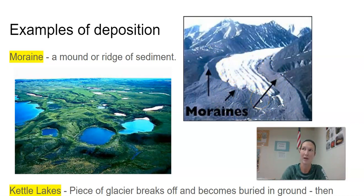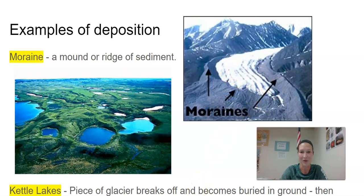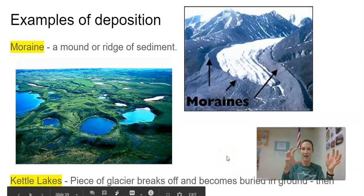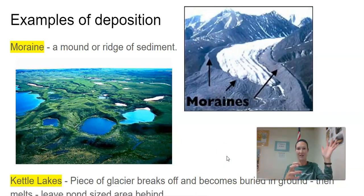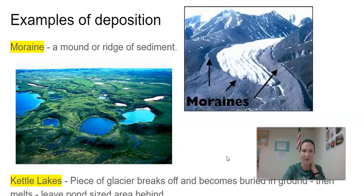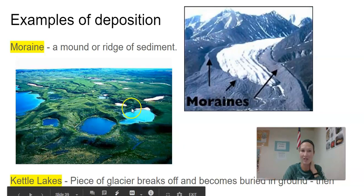This is called the moraine. One of your assignments talked about a terminal moraine, which just means the moraine at the end of the glacier. Here in Minnesota we have a lot of kettle lakes. A lot of these kettle lakes are pieces of glacier — what happens is the glacier is moving, a chunk breaks off, the glacier pushes over it, smooshing that ice chunk into the ground. It keeps moving, and that ice chunk eventually melts and becomes one of our kettle lakes. We can actually see these in Minnesota — hence the land of 10,000 lakes.